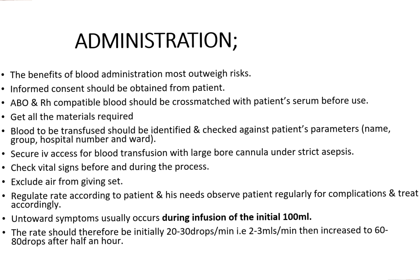Check vital signs before and during the process of transfusion. Exclude air from the giving sets. Regulate the rates according to the patient and his needs. Observe the patient regularly for complications and treat accordingly. Complications of blood transfusion during administration usually occur within the initial 100 mL; hence, the rate should initially be 20 to 30 drops per minute, that is 2 to 3 mL per minute, then increase to 60 to 80 drops after half an hour.